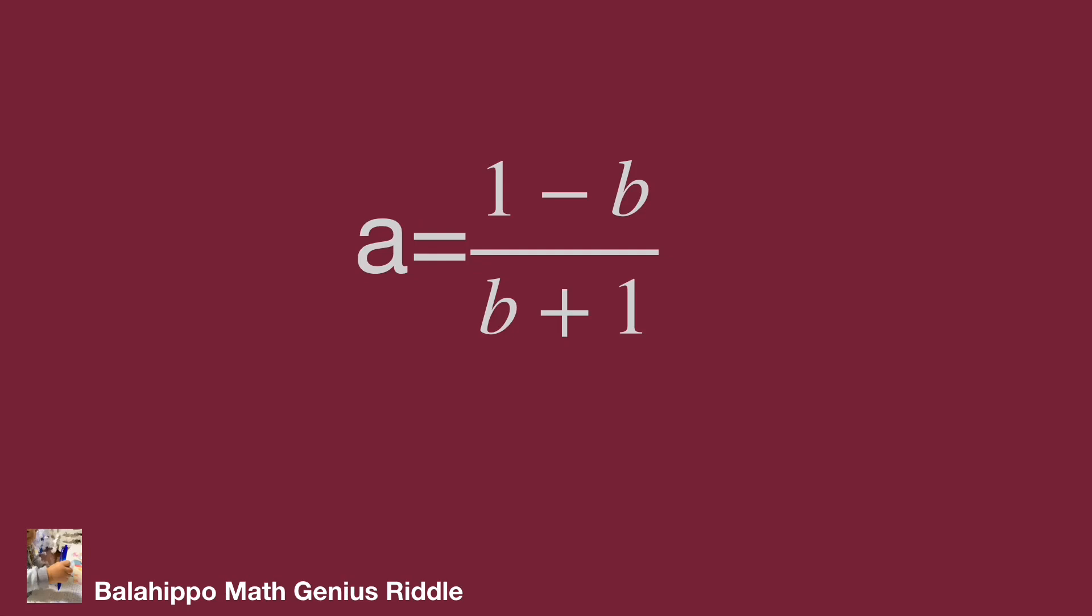Adjust the item sequence from (1 minus b) over (b plus 1) to become minus (b plus 1) over (b plus 1). After that, add (b plus 1) plus 2 into the numerator of this fraction. It equals (b plus 1 plus 2) over (b plus 1).